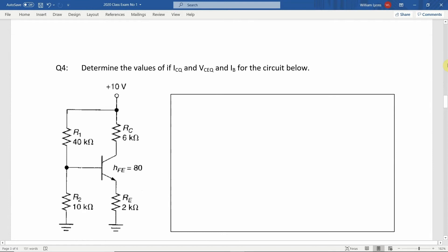Here we are presented with a voltage divider bias amplifier, or common emitter bias as it's also known. We are asked to determine the quiescent collector current ICQ, the quiescent collector emitter voltage VCEQ, and the base current IB for the circuit.